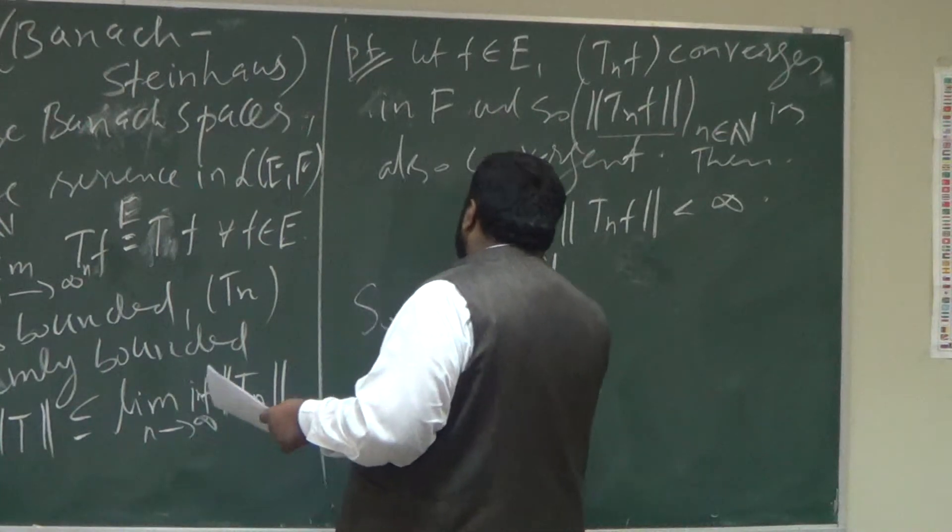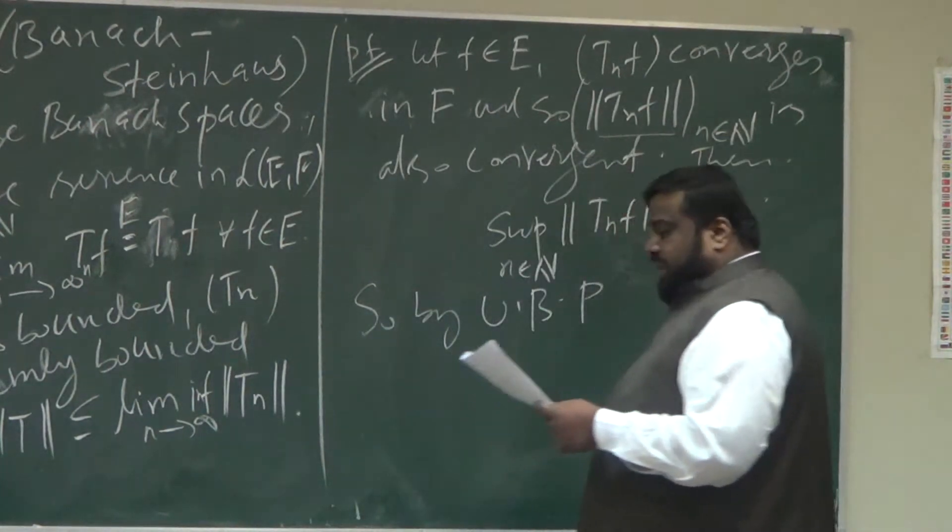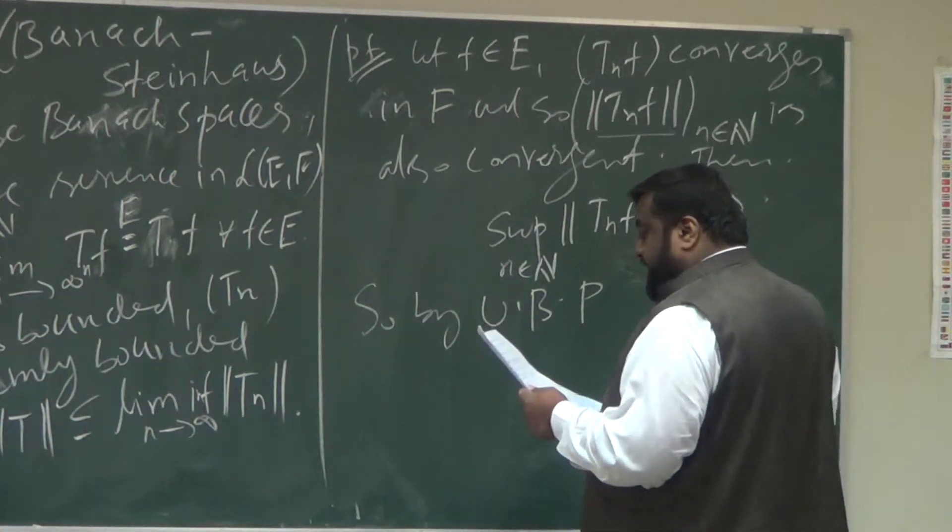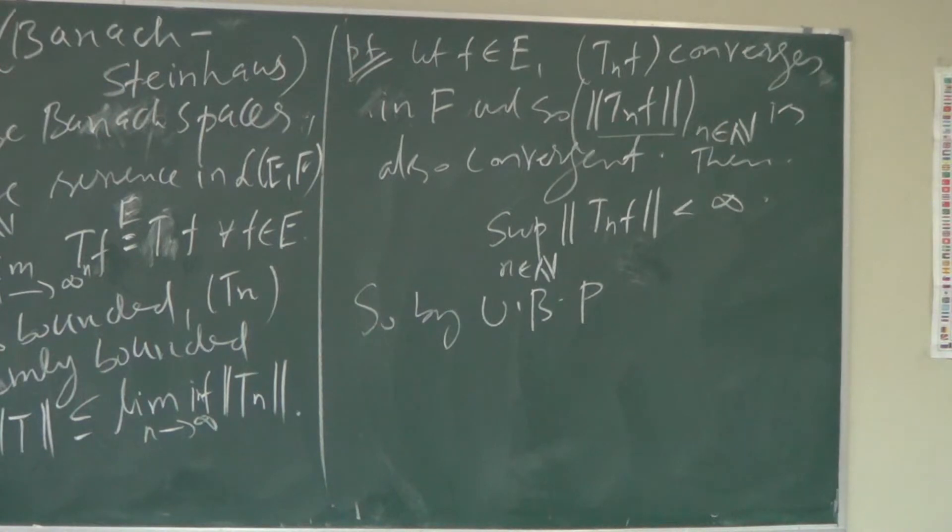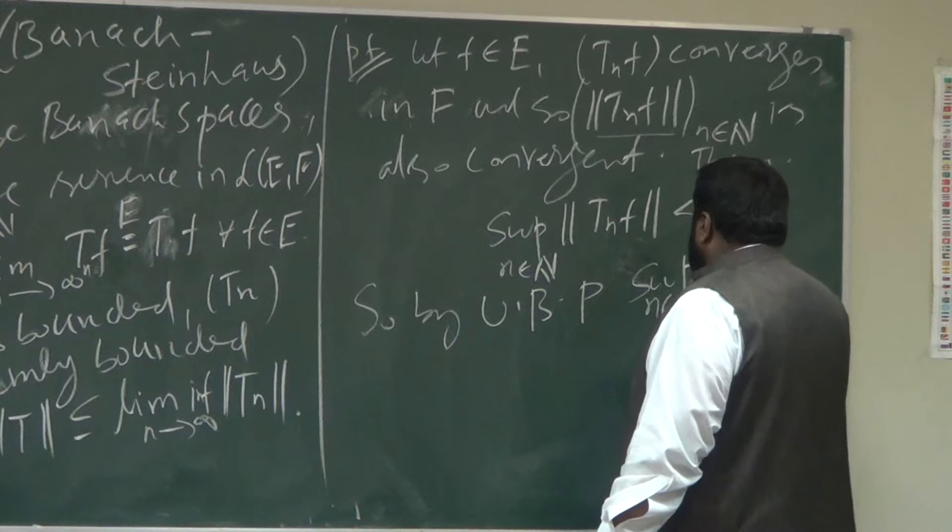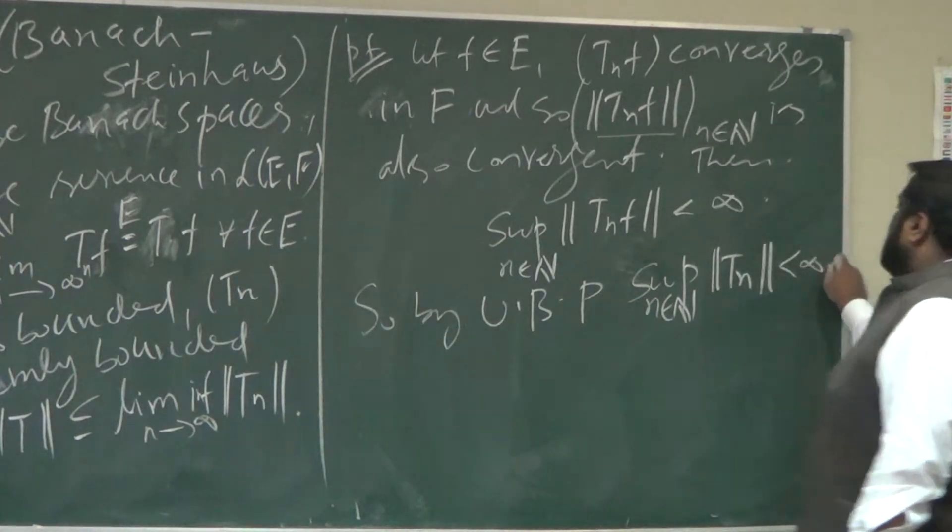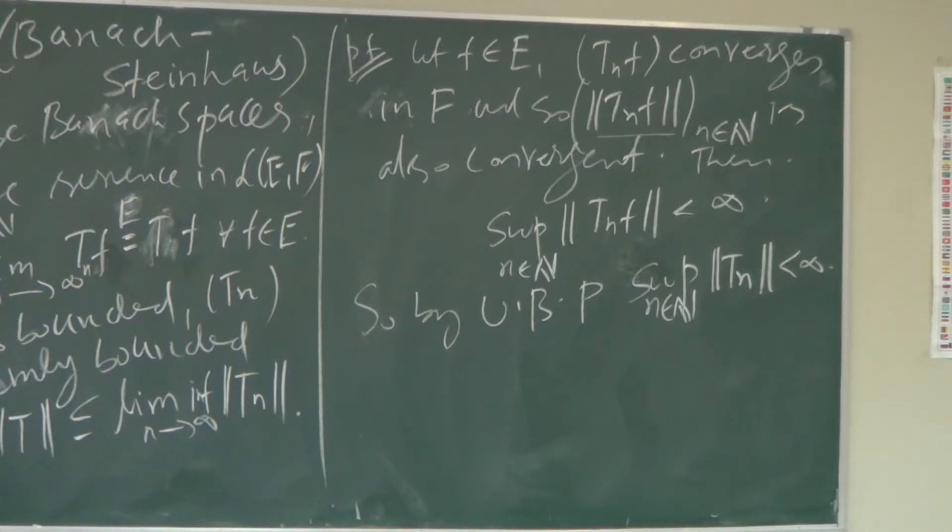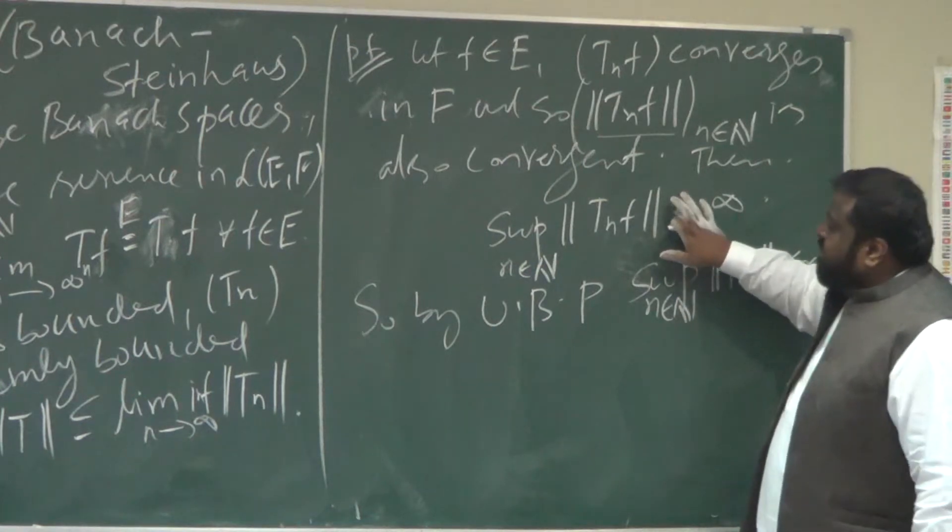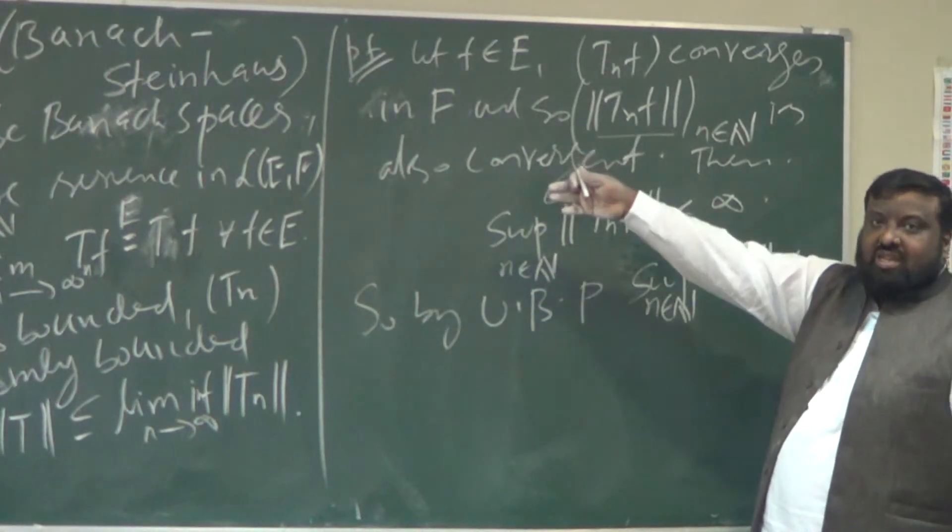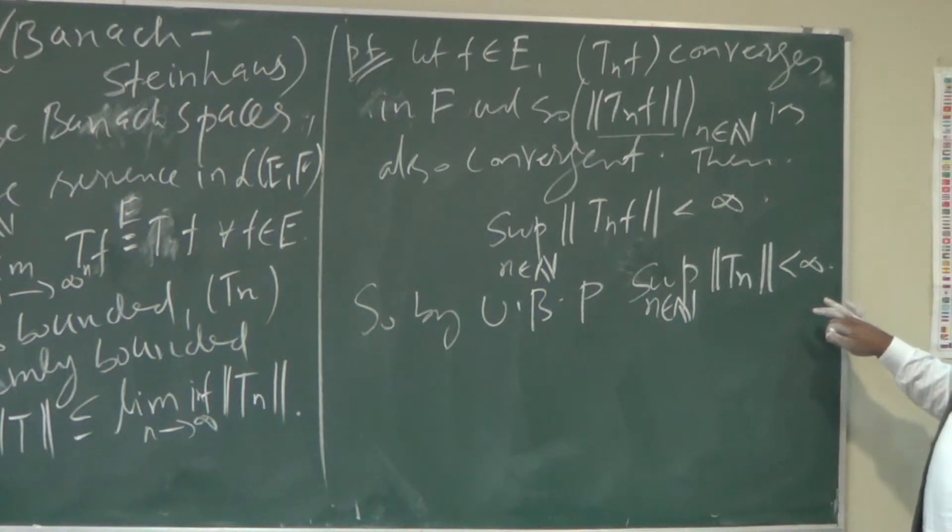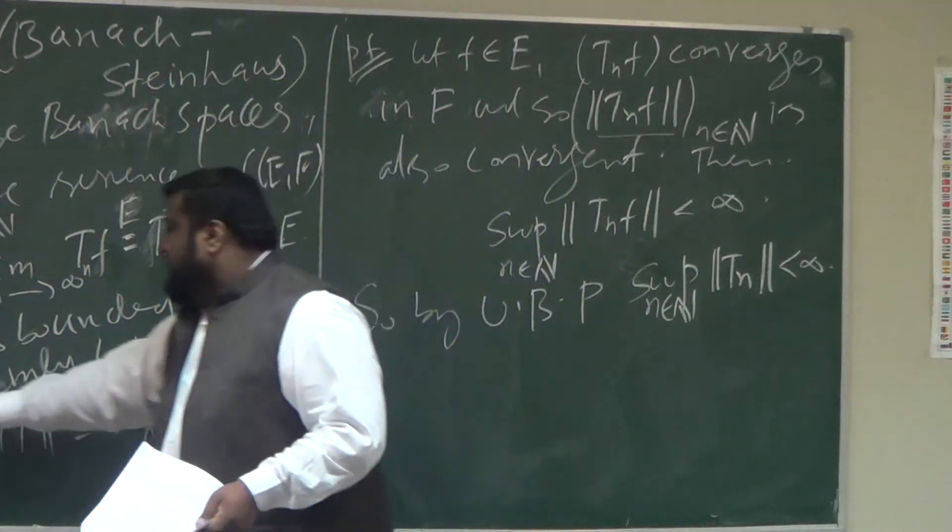So by Uniform Boundedness Principle, what follows? By Uniform Boundedness Principle, the supremum of N in N of norm of Tn is also finite. Why this must be the case? Because here you are kind of showing the point-wise boundedness. But E is Banach space, so it is same as uniform boundedness. So it is uniformly bounded as well. That's what the Uniform Boundedness Principle is.